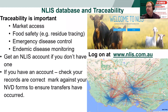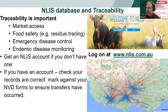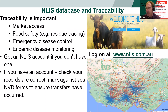The next step is the NLS database and traceability. Traceability is important because it gives us market access, food safety, emergency disease control, and disease monitoring. If you're going to have livestock on the property and you're going to move them off, you'll need to get an NLS account and register for LPA.